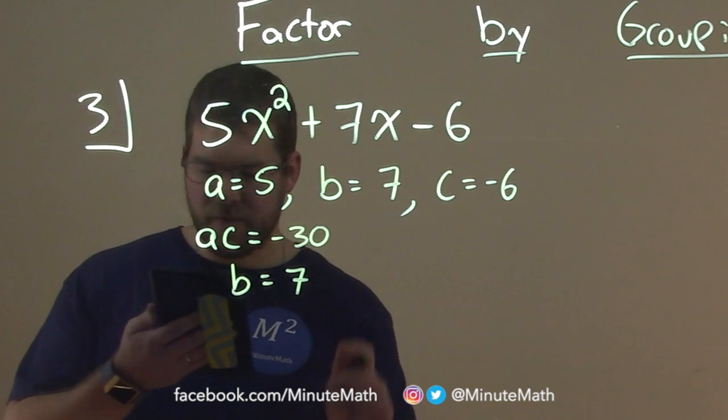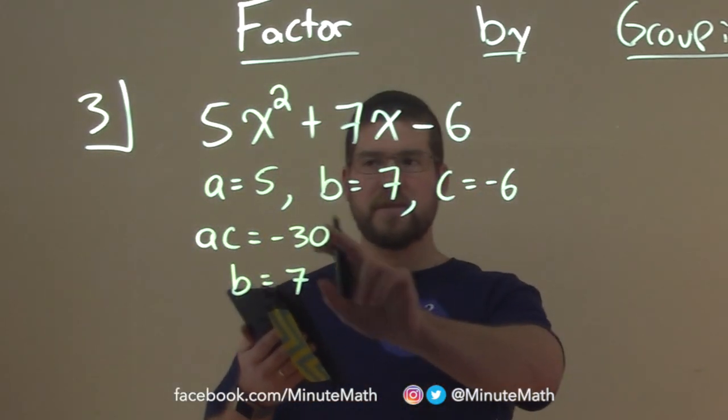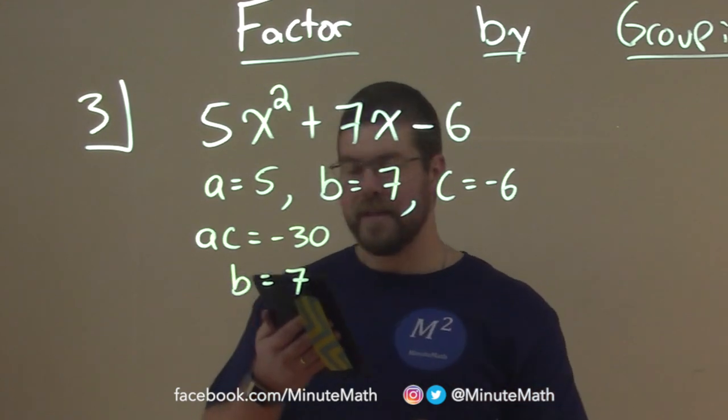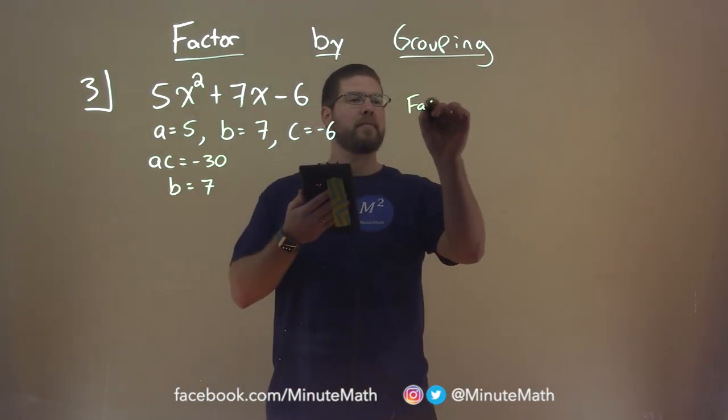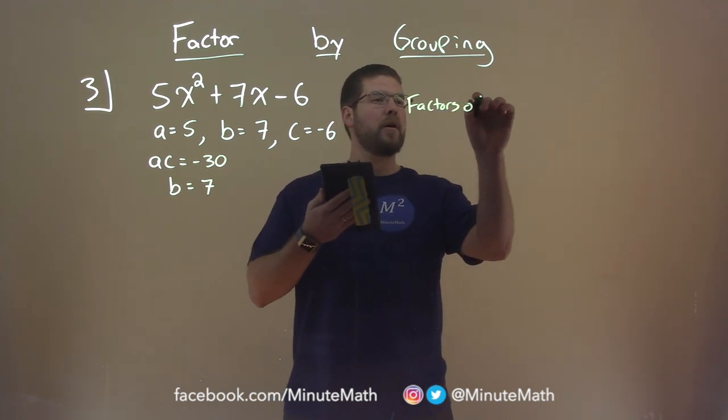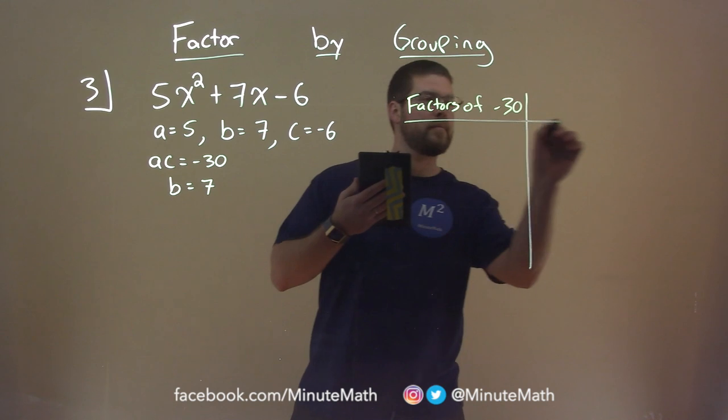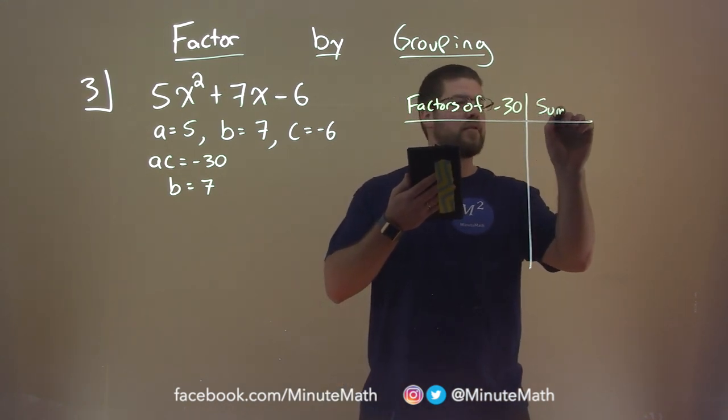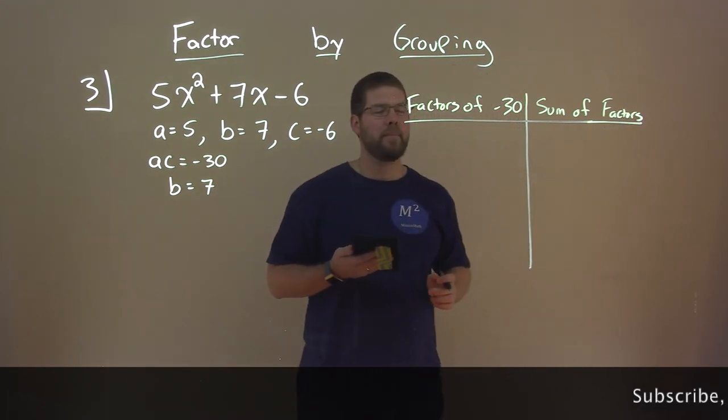So, what we're going to do, we have negative 30. We're going to see what two numbers multiply to be negative 30, and write those factors out. So, we have the factors of negative 30. Make a table here. And we're going to have the sum of those factors. And as you get better, you'll be able to do this table essentially in your head, but it can't hurt just to write it down.